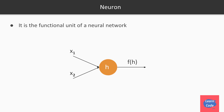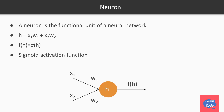This neuron, let's say, gets two inputs x1 and x2. It does some operation on top of it and outputs f of h. We also have two weights w1 and w2. In that case, h is equal to x1·w1 plus x2·w2, and f of h is the sigmoid of h, where sigmoid is the sigmoid activation function.